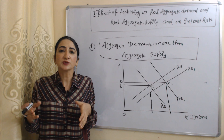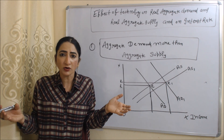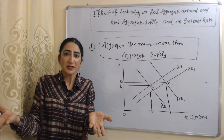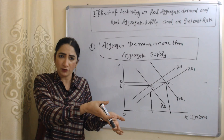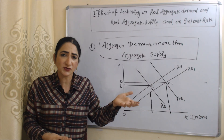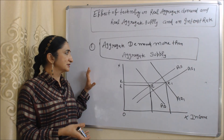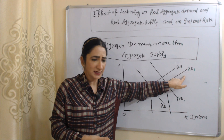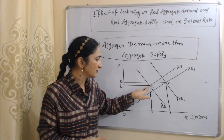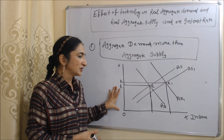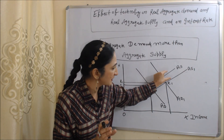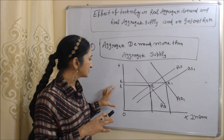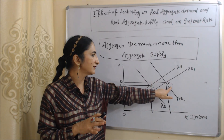Now we will see the effect of technology on real aggregate demand, real aggregate supply, and interest rate. When technology improves, aggregate demand increases as people demand more mobile phones, laptops, and computers. As aggregate demand increases, demand for investment also increases, and interest rate rises. In this diagram, when aggregate demand increases more than aggregate supply — AS and AS1 are supply curves, AD and AD1 are demand curves — interest rate rises from OR to OR1 and the new equilibrium point is E1.